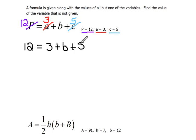Here on the right hand side we can combine these like terms. So we would have 12 equals 3 plus 5, which would be 8 plus B.